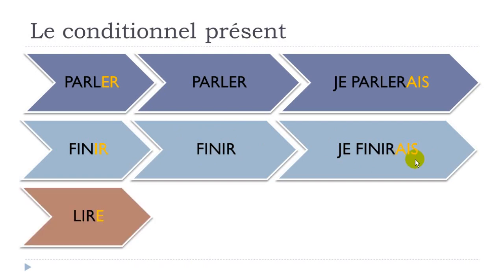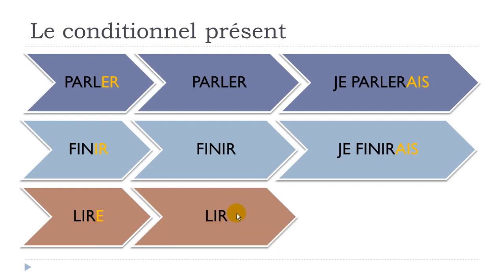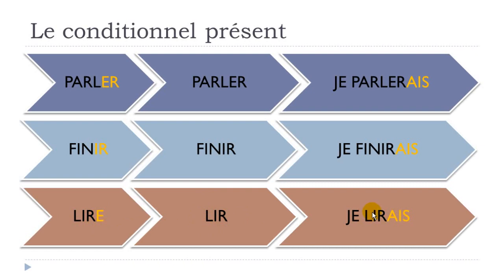For the third group of verbs, we have some exceptions we'll see later. But the main rule is: if the verb ends with E, like lire (to read), you take that E away — as is common in French — and after that you add your ending. Je lirais. So the rule is: if there's a final E, remove it, then add the ending AIS. So you get three forms: Je parlerais, Je finirais, Je lirais — parler meaning to speak, finir to finish, lire to read.